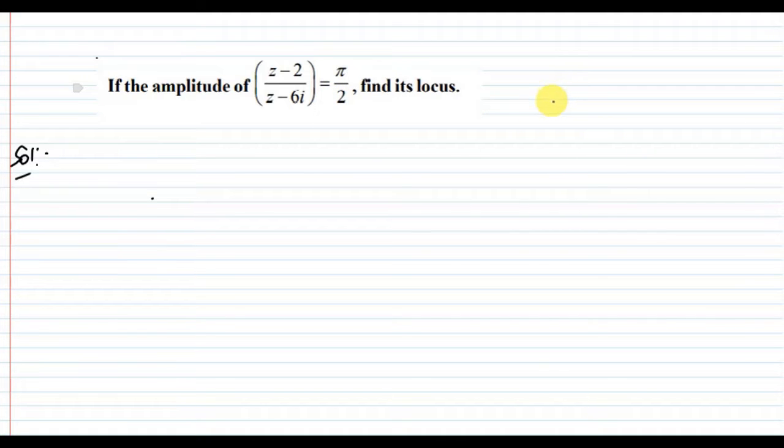First, let me tell you what amplitude means. For example, for a complex number a + ib, the amplitude is also called the argument. We denote it as theta. The answer is tan inverse of imaginary part by real part. We can call this argument or amplitude—both are the same.